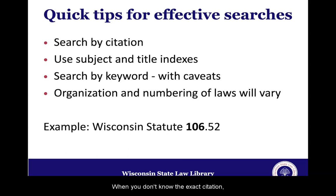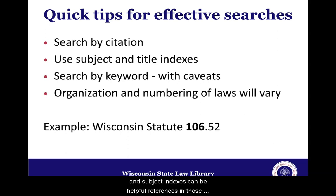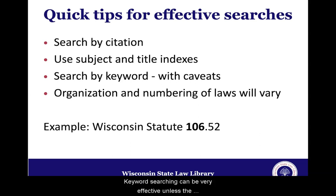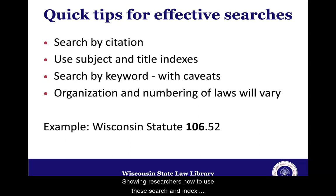When you don't know the exact citation, I strongly recommend looking for indexes and tables to help you find the law. Sometimes people want to find a law that doesn't exist, and subject indexes can be helpful references in those situations as well, to show that while there are other laws in related subject areas, there don't appear to be laws matching the question. Keyword searching can be very effective unless the keywords aren't very unique. Sometimes library visitors may want to research a vague law or a law from another state. Showing researchers how to use these search and index tools can be a useful way to answer those difficult questions.